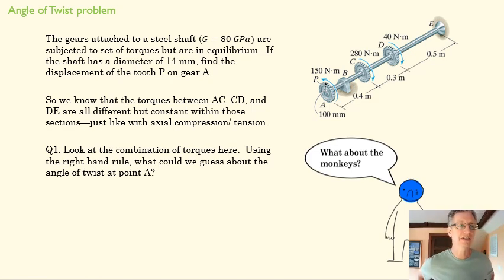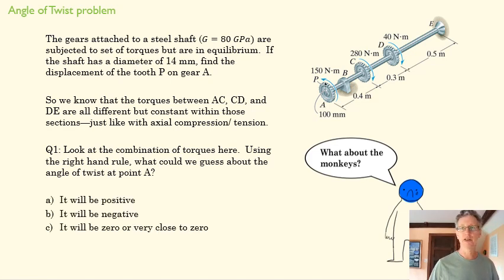We'll start by guessing which direction the angle of twist is going. First, use your right-hand rule—point your thumb in the axial direction away from a support, and that'll tell you what your positive direction is. As always, it's good to estimate before you start a problem.